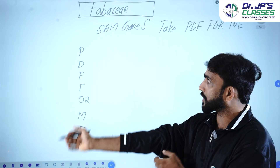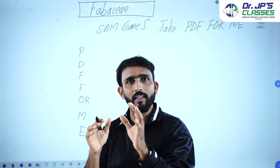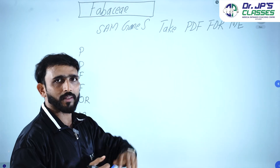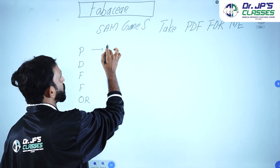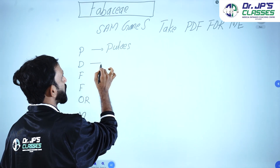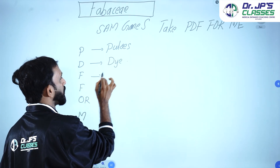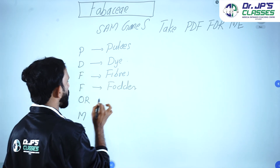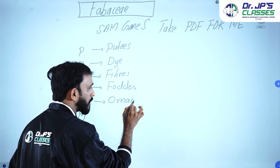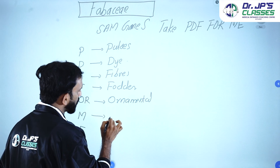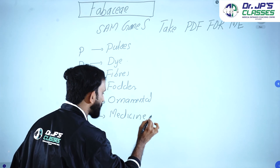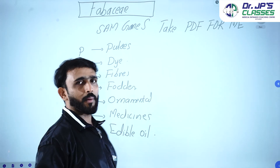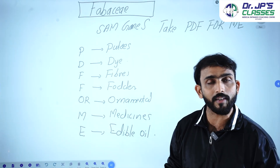If you look at this family, its economic importance: we have written the name of the plant. The economic importance categories are Pulses, Dye, Fiber, Fodder, Ornamental, Medicines, and Edible Oil. This is the economic importance of this family.